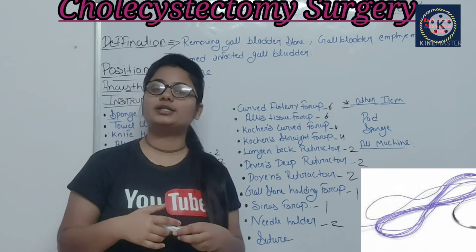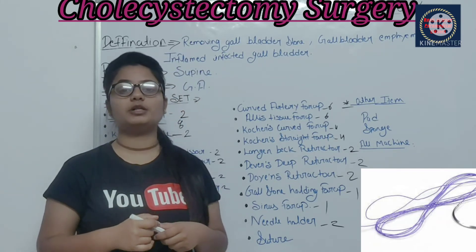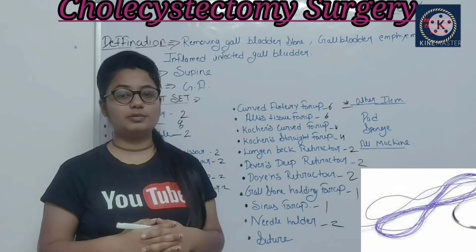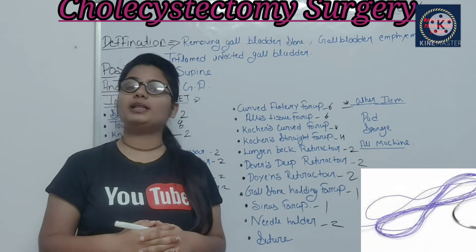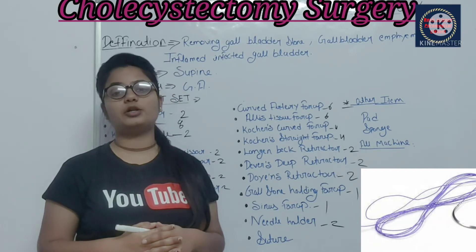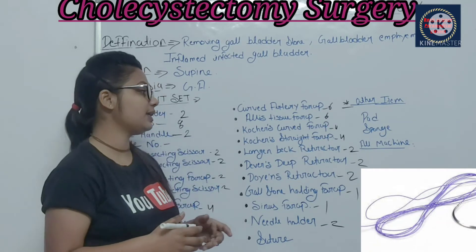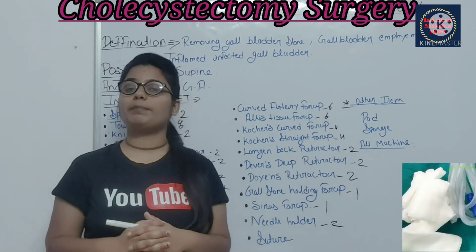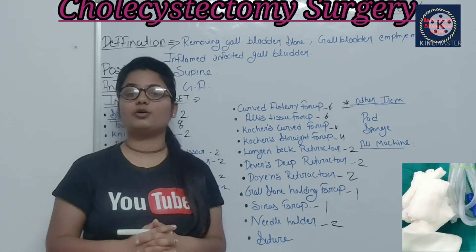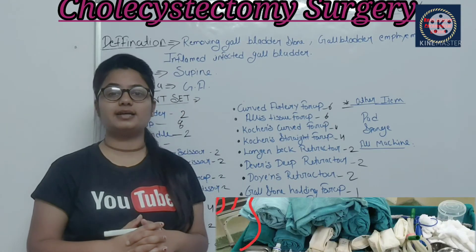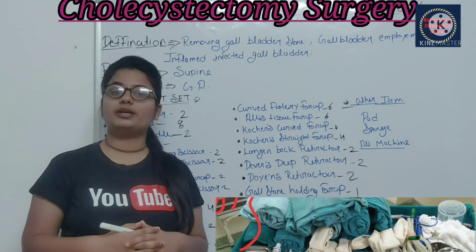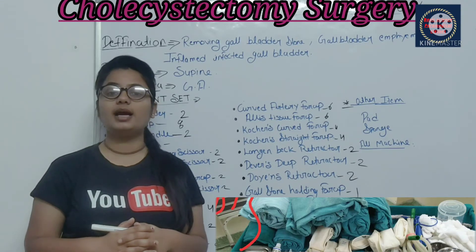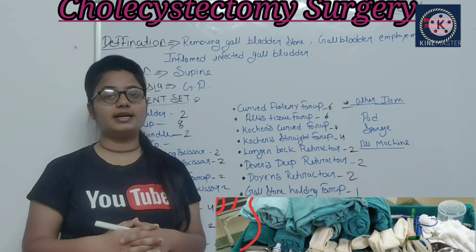For sutures, the upper layer suturing uses non-absorbable sutures and the internal layer suturing uses absorbable sutures — so both absorbable and non-absorbable sutures are needed. Other extra items include pad, sponge, bowel, kidney trays, drapes. In addition, you need a suction machine, electrocautery machine, and anesthesia machine for the patient's surgery.